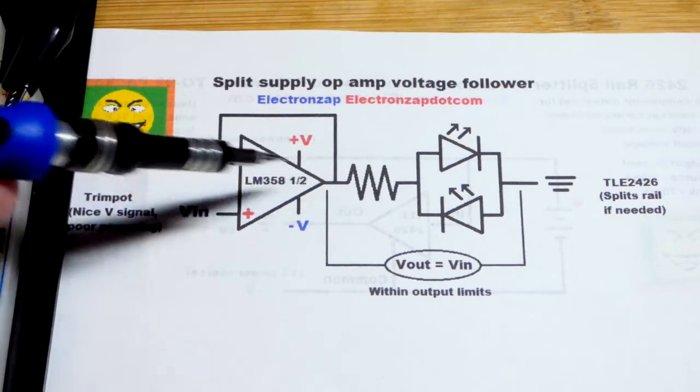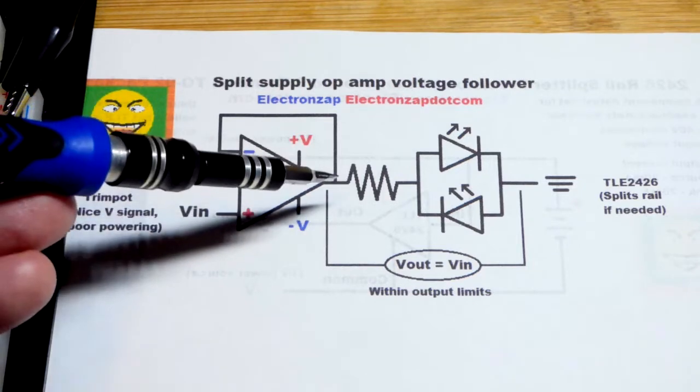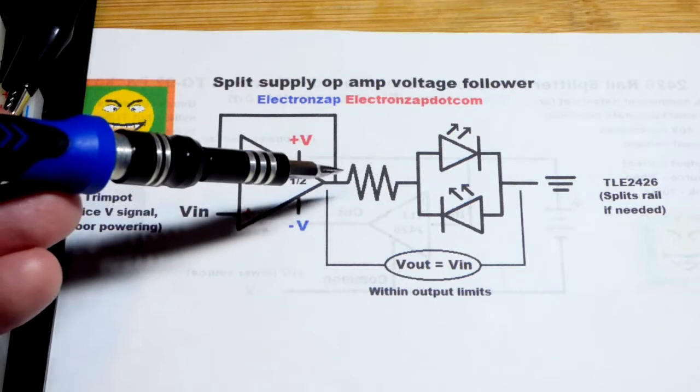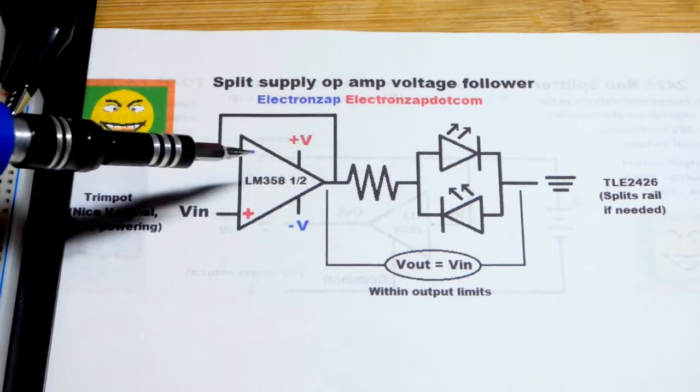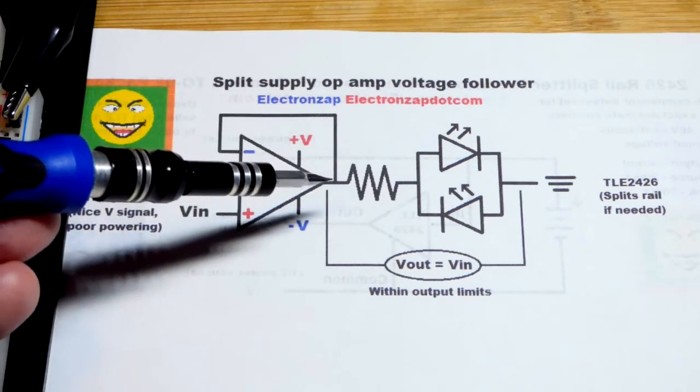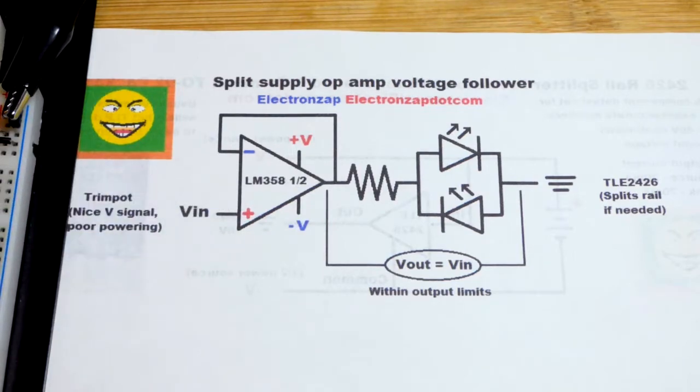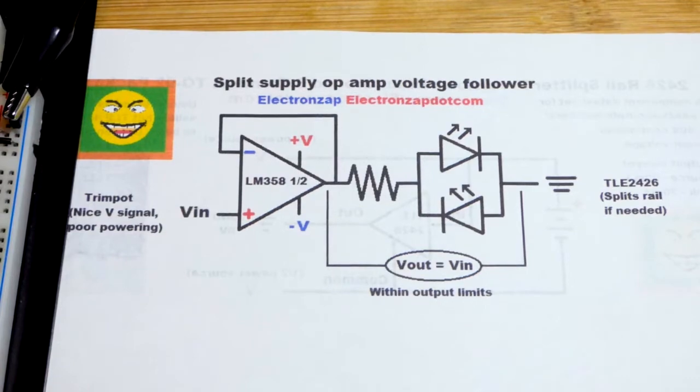When the inverting input goes higher than the non-inverting, the output lowers the voltage. When it goes lower, the output raises the voltage. Since it's a direct connection it will raise and lower the voltage directly as needed to be the same voltage as voltage in, even as the load varies.